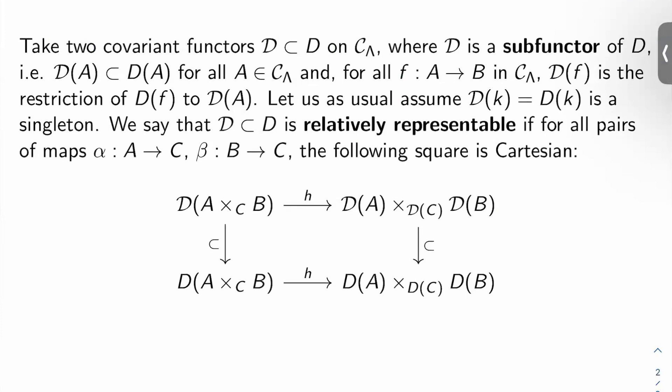Let's take two covariant functors, script D and D, on C sub lambda, where script D is a sub-functor of D, which means script D of A is in D of A for all A in C lambda, and for all F from A to B in C lambda, script D of F is just the restriction of D of F to script D of A. This is just category theory terminology.